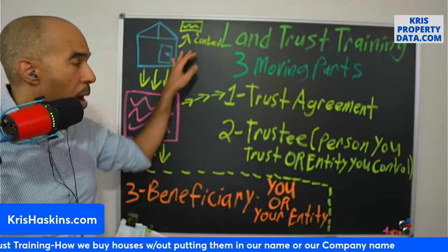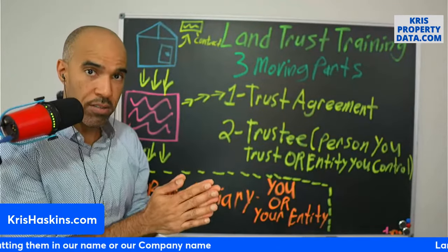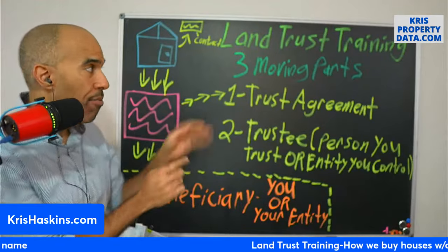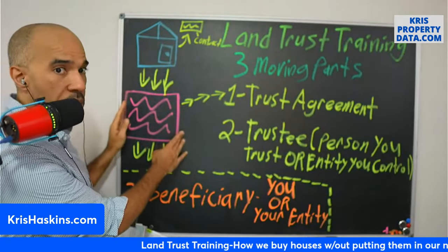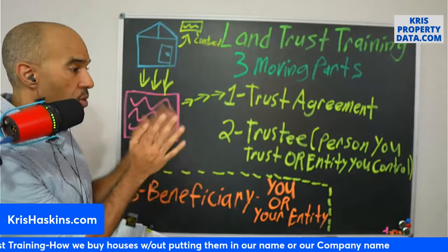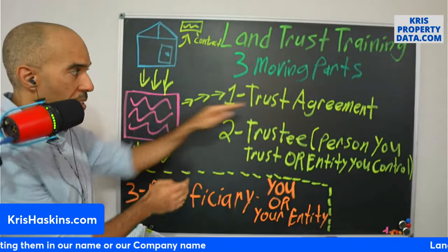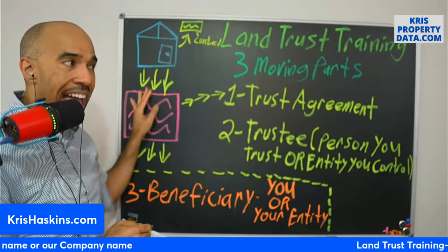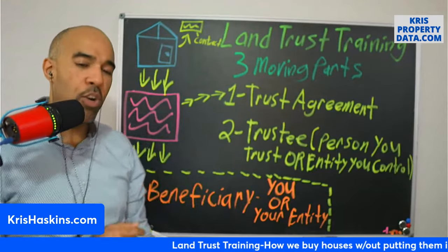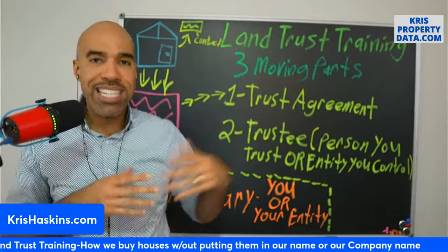When you get the property under contract, you're going to put the trust as the buyer — just write it on there. Your trustee will sign on behalf of the trust on that contract. The purchase and sale agreement will confirm who the buyer is: one-two-three trust. Next you fill out your trust agreement with the property address, go to closing, and the title company or your attorney will create a deed deeding it into the trust.